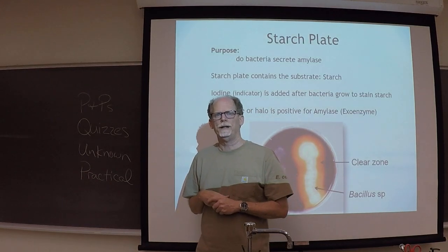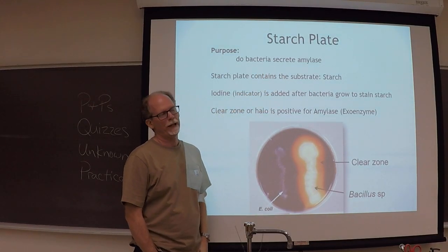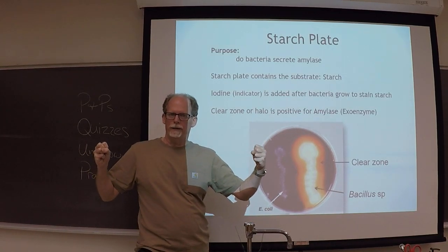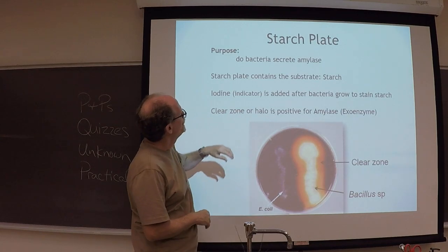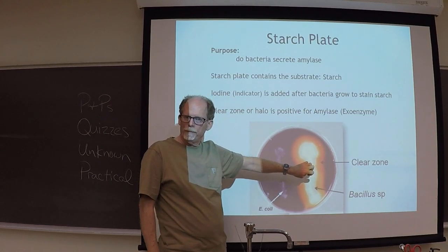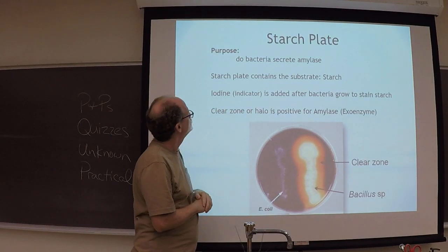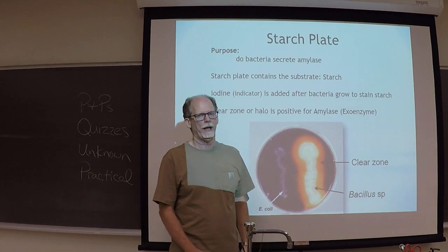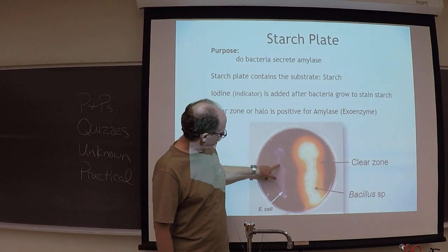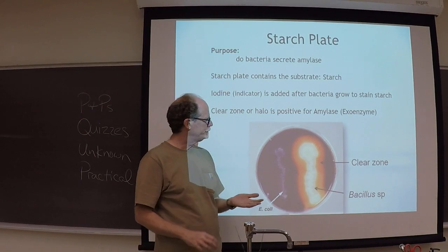The starch plate is a bit more complicated. The purpose is to determine whether bacteria secrete the enzyme amylase. Amylase is the enzyme that breaks down starch. Starch is a macromolecule containing many glucoses — if you break it into individual glucoses with amylase, the bacteria can absorb the sugar and use it as a carbon and energy source. The plate itself contains starch. After the bacteria grow, you add iodine to the plate to stain it.